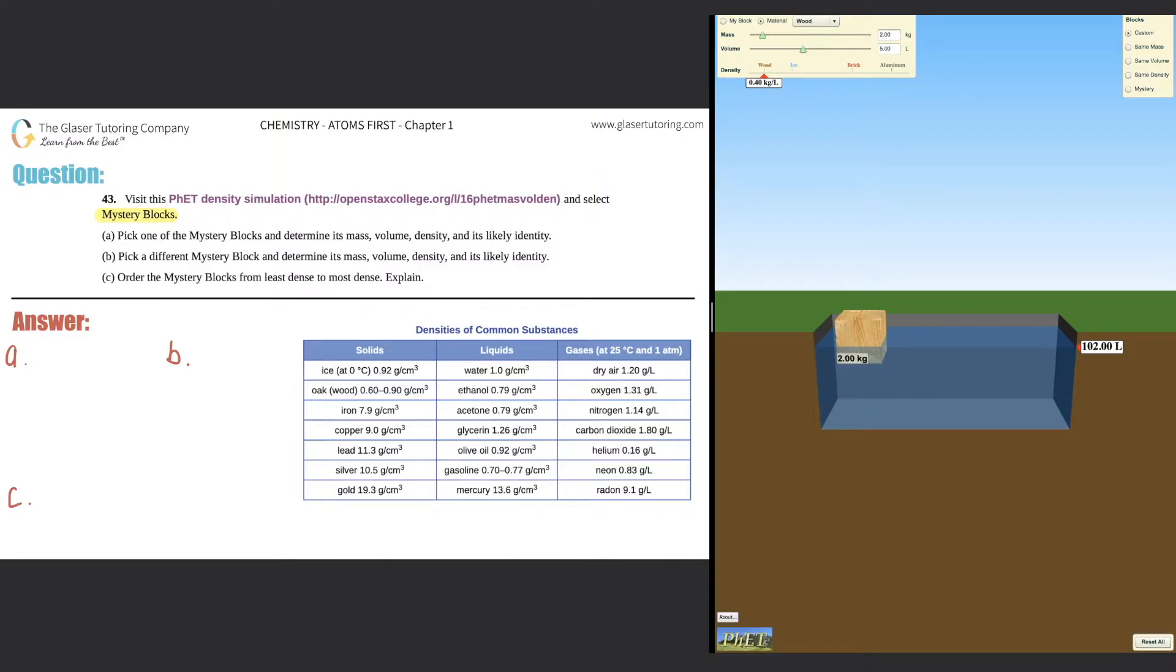So first thing that you have to do is go to this website right here. And what you're going to see is this very nice simulation that's on the right hand side. But we have to select mystery blocks to get the right application. So go up to the right hand corner. It's now on custom. So you got to go all the way down. It's the fifth one down and you click mystery. So that's what I'm going to do.